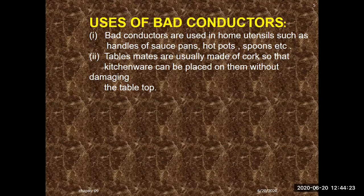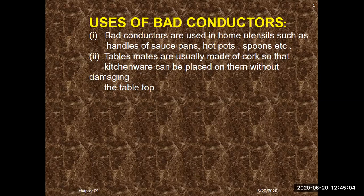Uses of bad conductors: this also plays an important role in our life. We use bad conductors to stop the flow of heat, taking steps to keep heat transfer to a minimum. Bad conductors are used in home utensils such as handles of saucepans, hot pots, and spoons — without them it would be very difficult to handle hot utensils. That is why handles are made of insulators. Table mats are usually made of cork so that hot kitchen items can be placed without damaging the table surface.